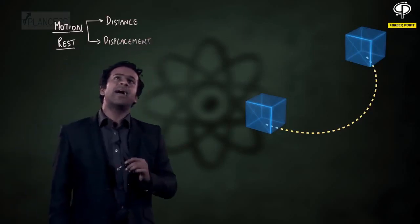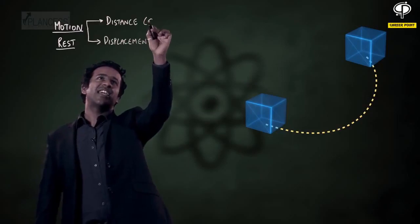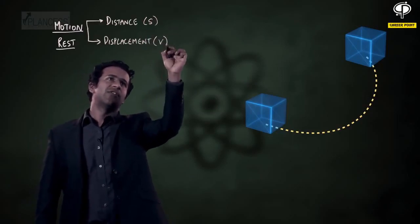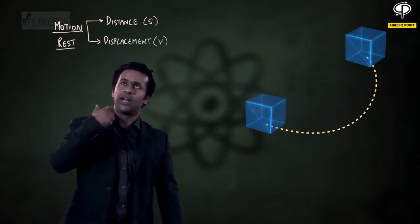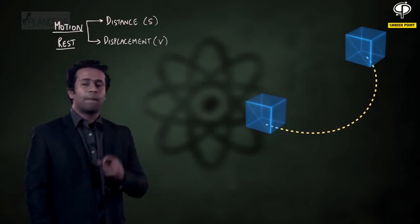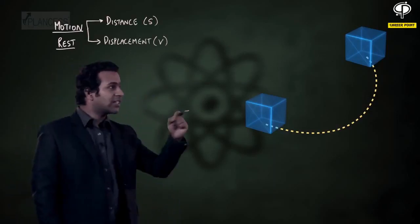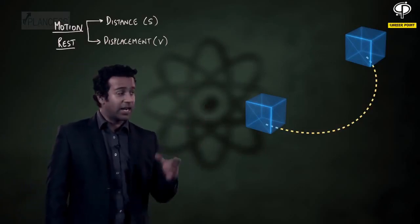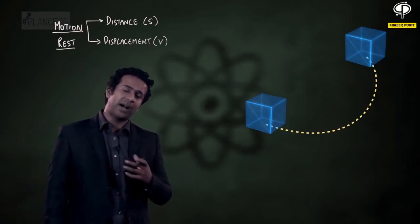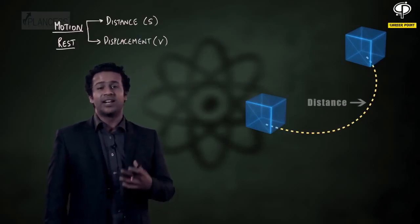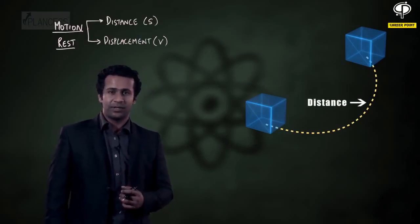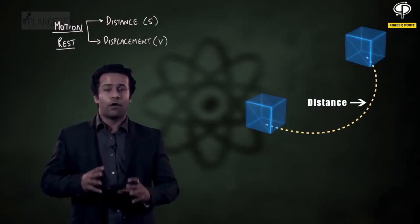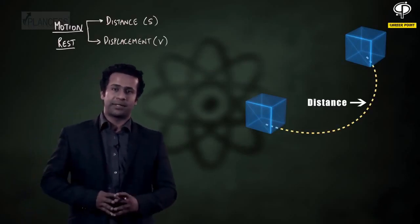You should also keep in mind that distance is a scalar quantity and displacement is a vector quantity. We will come to it shortly. Now, whenever something moves, it takes a route or a path. The length of the path taken by the particle is said to be the distance covered. So, distance is nothing but the length of the path taken by the particle.